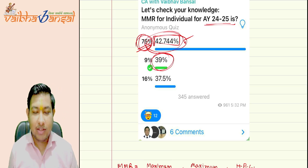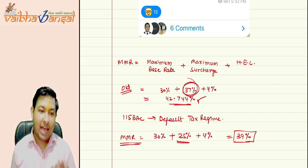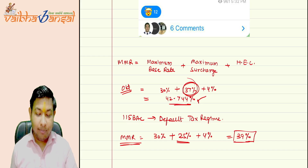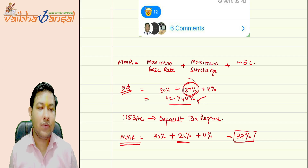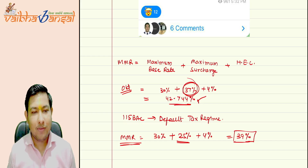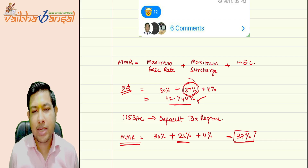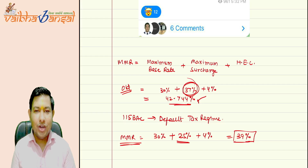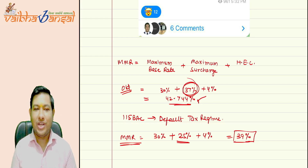So this is all for today. Remember, the MMR is 39% from now onwards. Do not make the mistake of using the maximum surcharge of 37% unless the individual has opted out from Section 115BAC — in that case, the maximum surcharge will be 37%. Let's meet in the video on MAT and AMT. Take care.